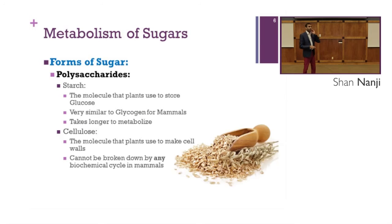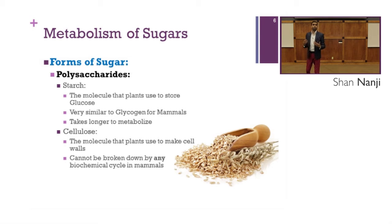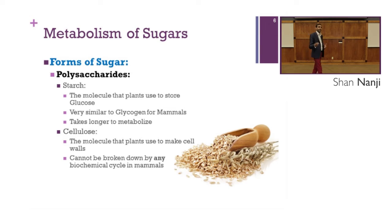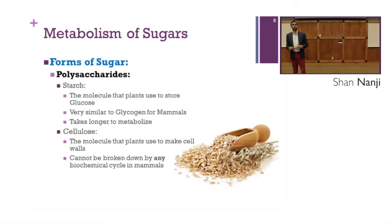Now let's talk about polysaccharides. Starch is the molecule that plants use to store glucose — it's very similar to glycogen for mammals, but takes longer to metabolize. Since starch takes much longer to break down, foods with high quantities of starch are often called complex carbohydrates or complex carbs. Examples include bread, pasta, rice, and cereals.